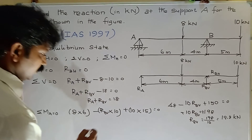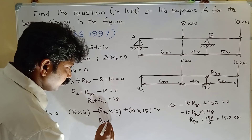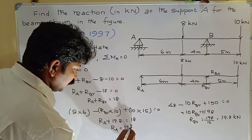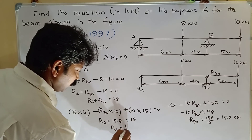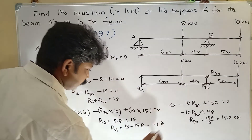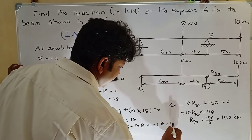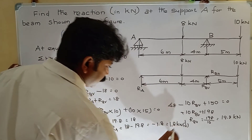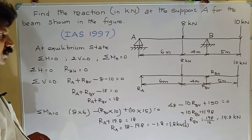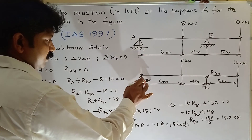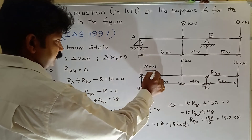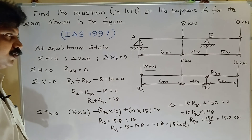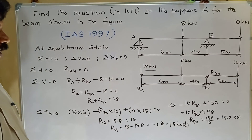Now substitute RB_V into the equation: RA plus 19.8 equal to 18, so RA equal to 18 minus 19.8 equal to minus 1.8. Therefore RA equal to 1.8 kilonewtons acting in the downward direction.